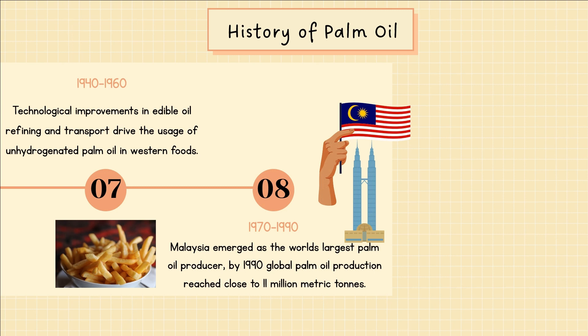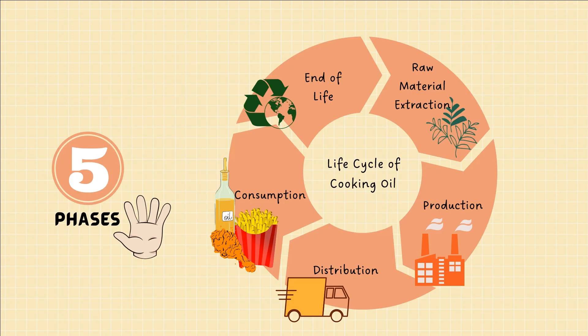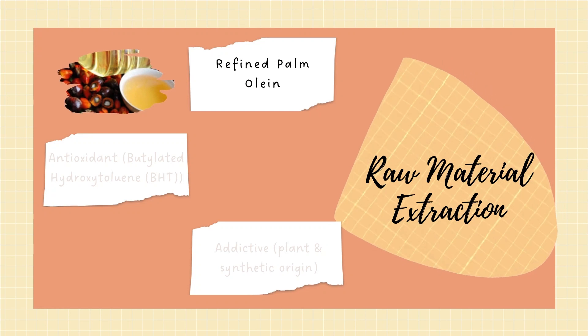Lastly, from 1970–1990, Malaysia emerged as the world's largest palm oil producer. By 1990, global palm oil production reached close to 11 million metric tons. The second part is the life cycle of cooking oil. There are five stages of the product life cycle: raw material extraction, production, distribution, consumption, and end of life.